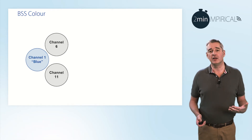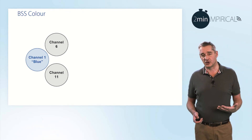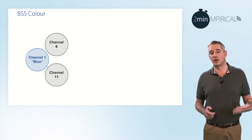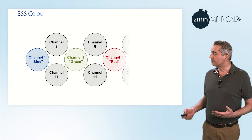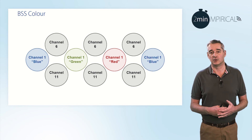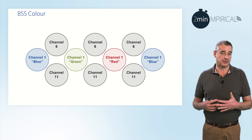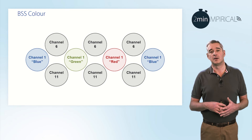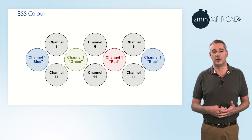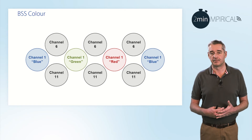Therefore, BSS Colour adds some additional information. On the diagram, we can see that channel 1 now also carries the colour blue. This has been extended for other access points also on channel 1, using different colours — green and red — before eventually returning back to an access point again on channel 1 but also on colour blue. The same principle will work for channel 6 and channel 11, though they have been omitted from this particular video.